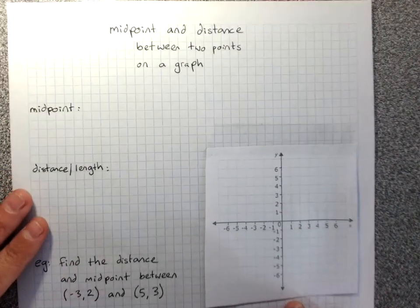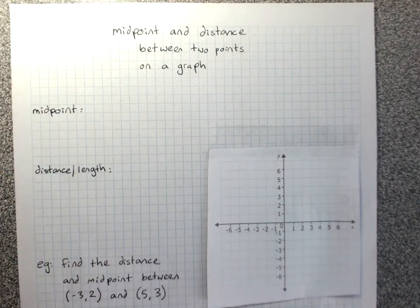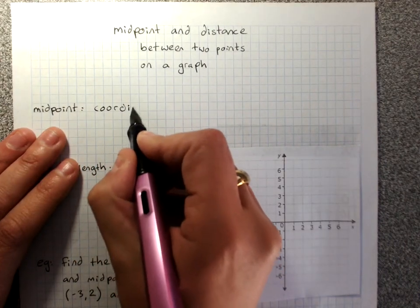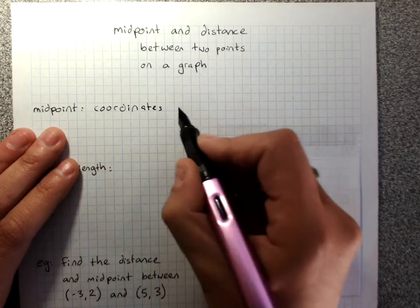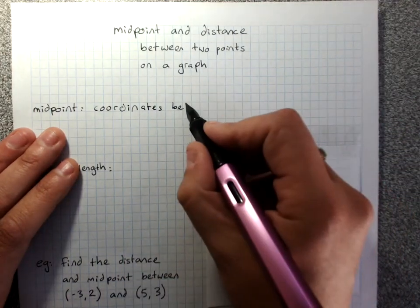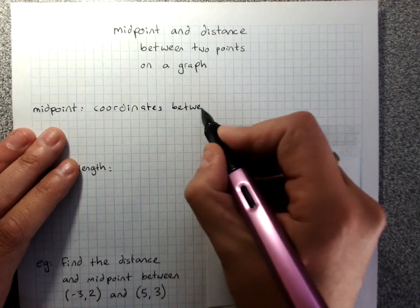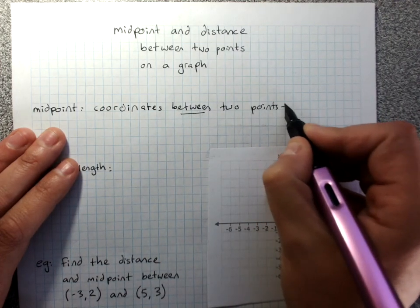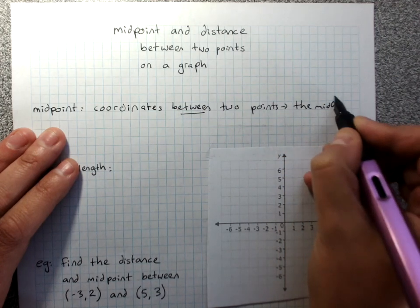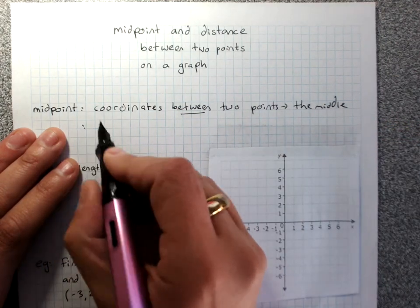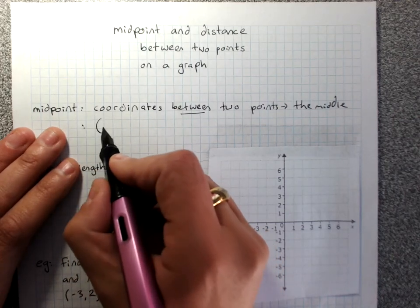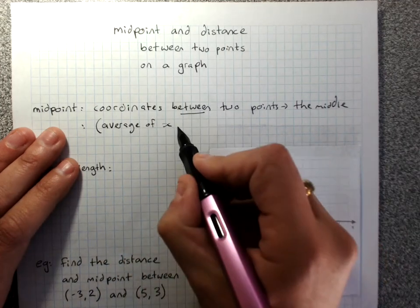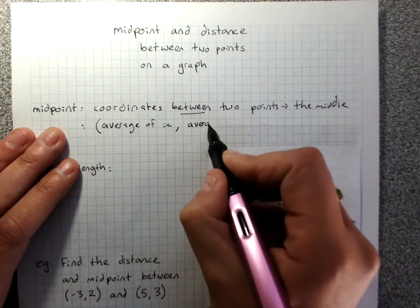Midpoint and distance between two points on a graph. The midpoint is the coordinates between two points at the middle, and we get it by finding the average of the x coordinates and the average of the y coordinates.